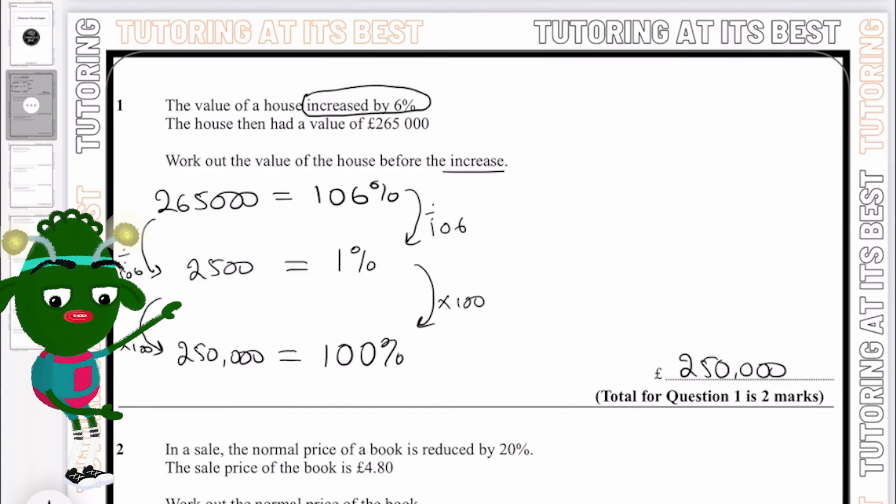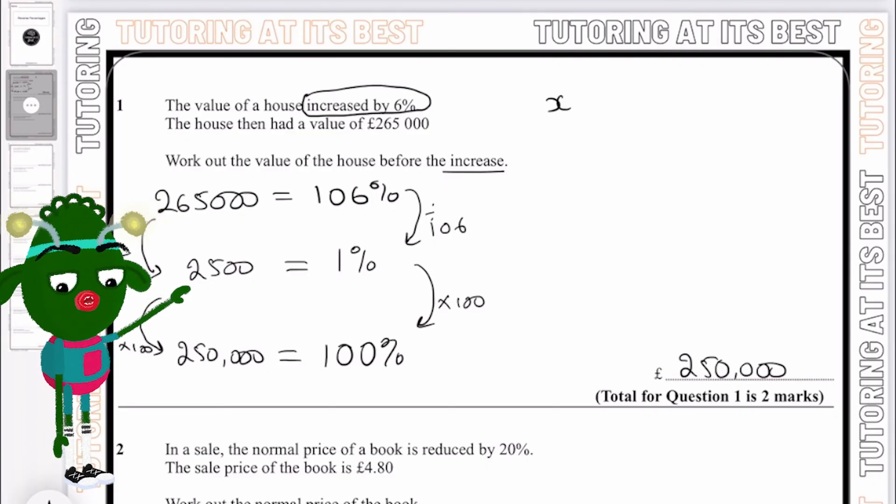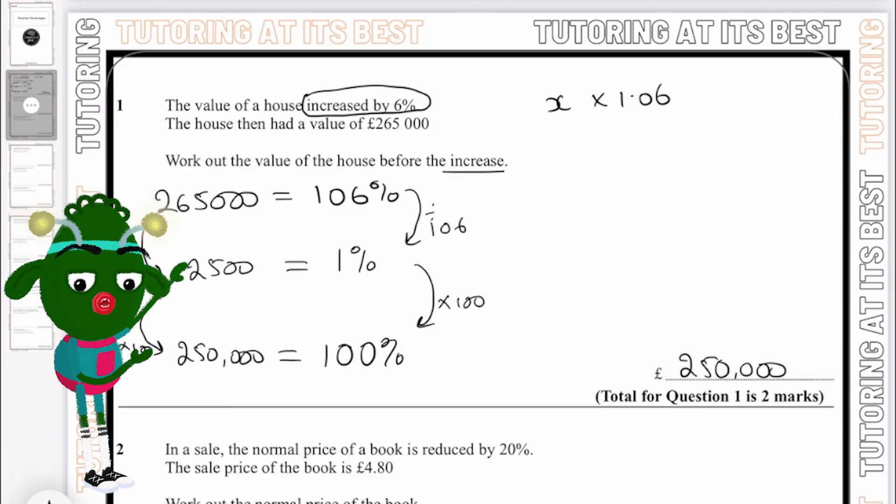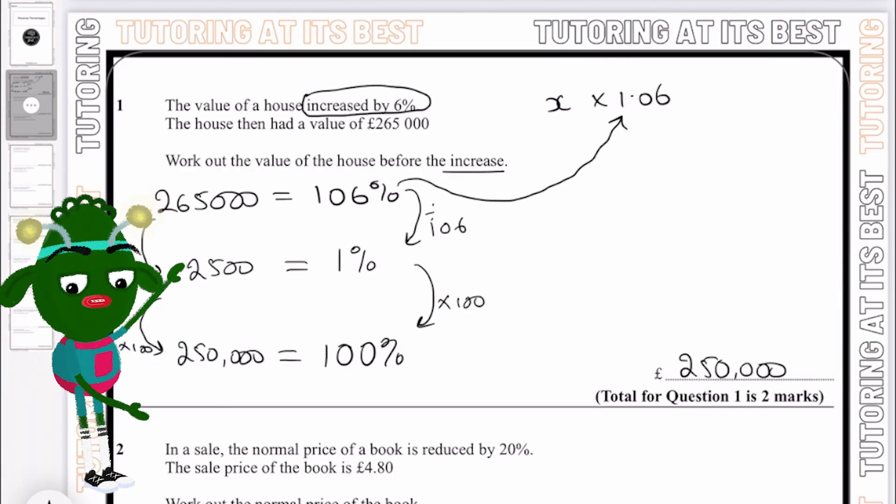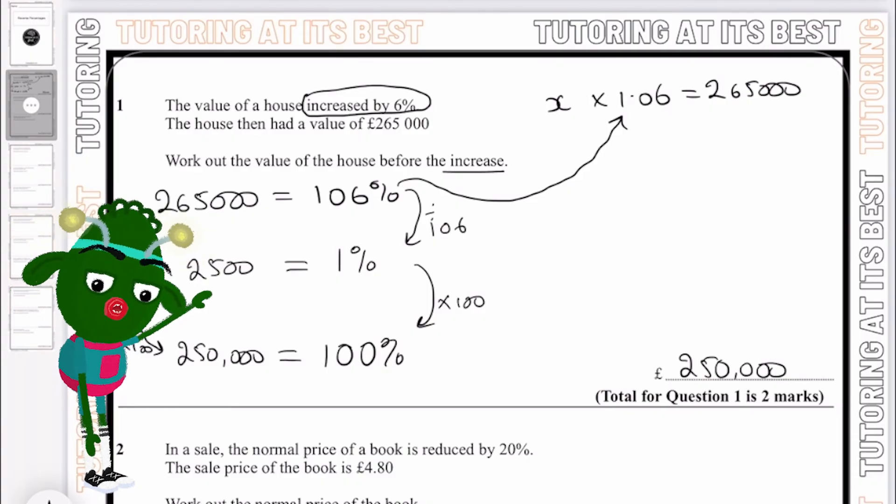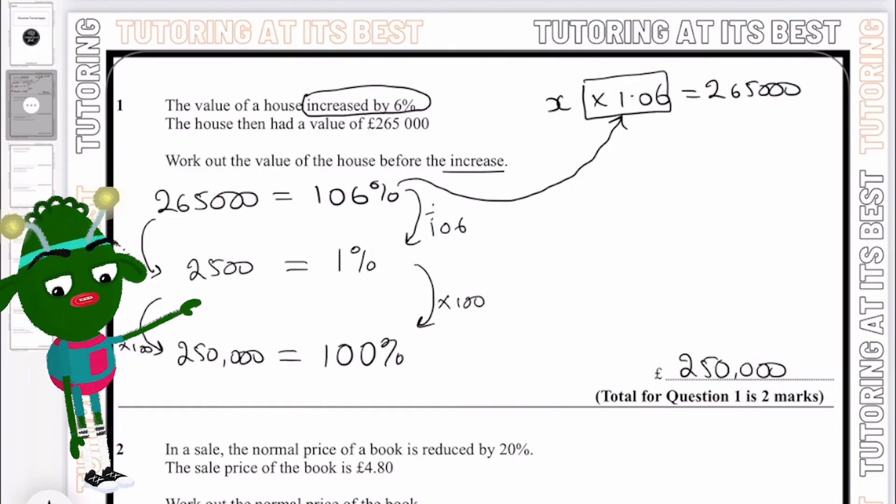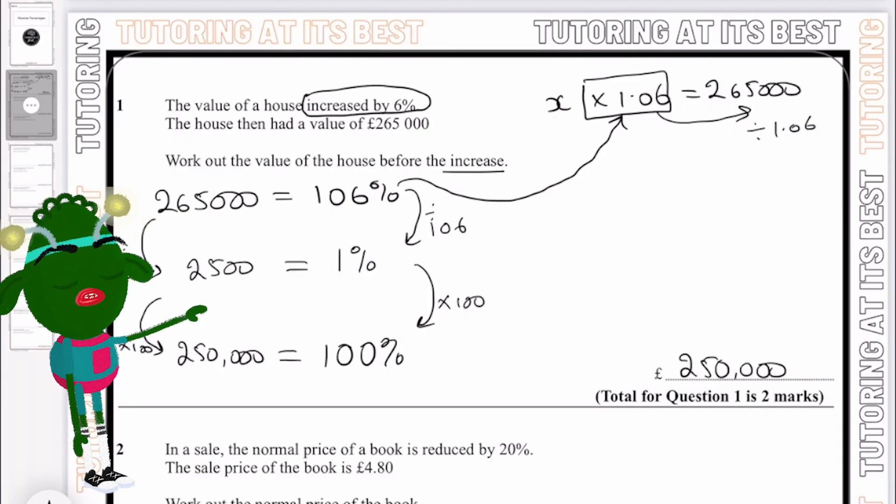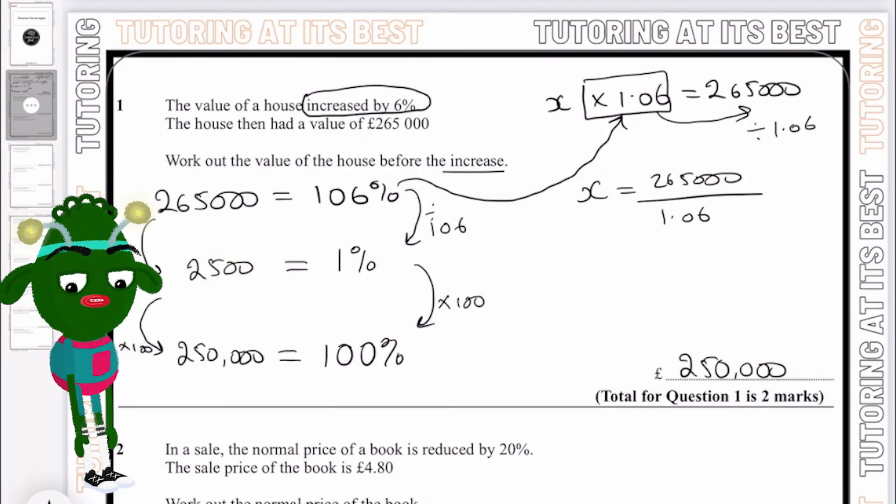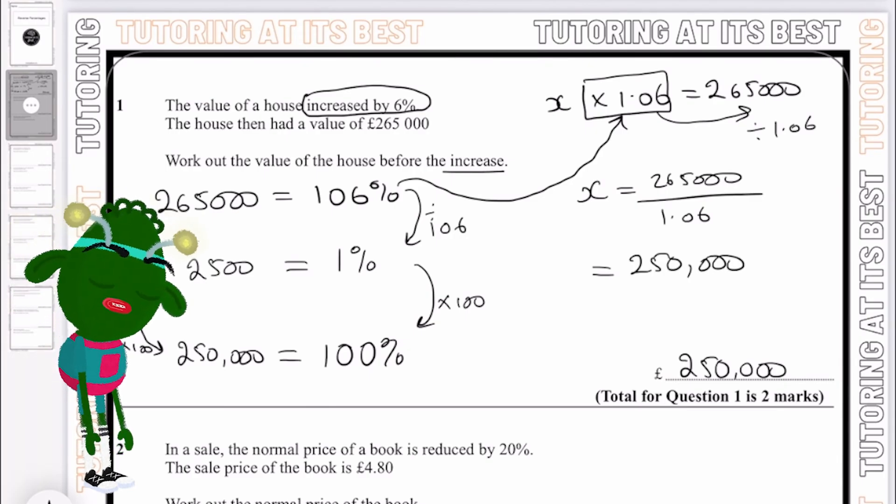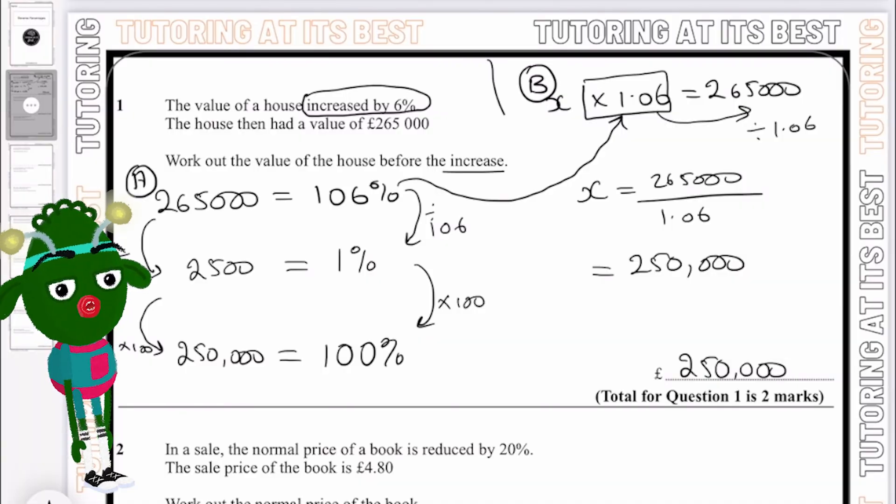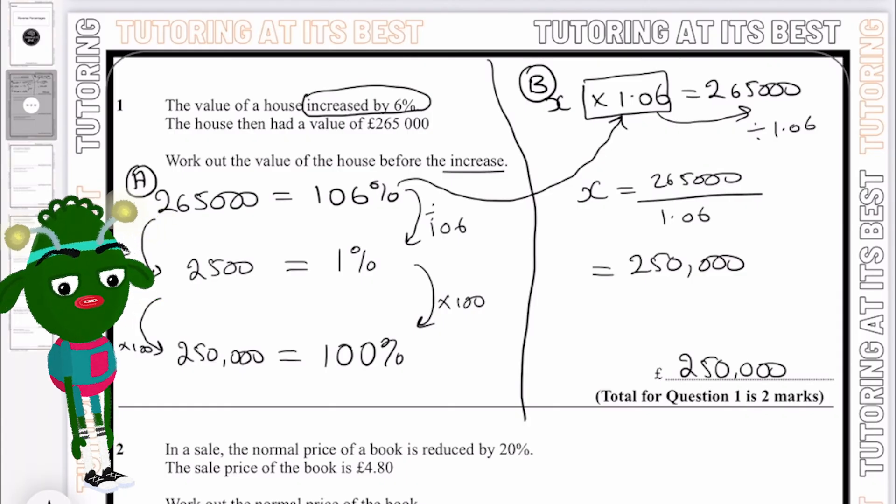But there's also another method that we can choose. And that is by simply multiplying our x, which is the £250,000, multiplied by 1.06, and that's just a conversion between the percentage into a decimal. That would equal £265,000. Then we need to make x the subject. So we're going to take it over to the other side and that will become divided by 1.06, which means x equals £265,000 divided by 1.06. If we calculate that with a calculator we would get £250,000. You can either go with method A or method B, it's entirely up to you.